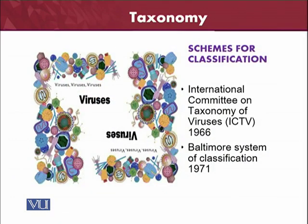There are two different kinds of schemes of classification for viruses. The first is the International Committee on the Taxonomy of Viruses, built in 1966, also called ICTV, which provides the system for the nomenclature of viruses. The second is the Baltimore system of classification.